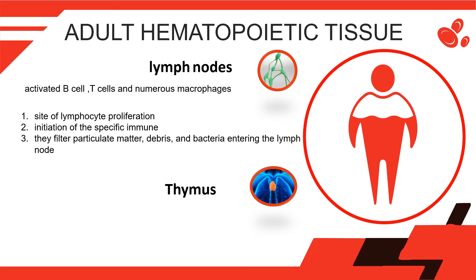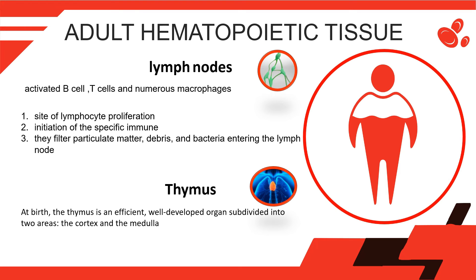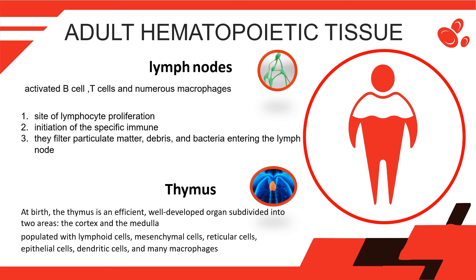The thymus is an efficient, well-developed organ at birth. It consists of two lobes divided into lobules, which are subdivided into two areas: the cortex and the medulla. Both areas are populated with the same cellular components — lymphoid cells, mesenchymal cells, reticular cells, epithelial cells, dendritic cells, and many macrophages. The thymus also contains other cell types including B-cells, eosinophils, neutrophils, and other myeloid cells.